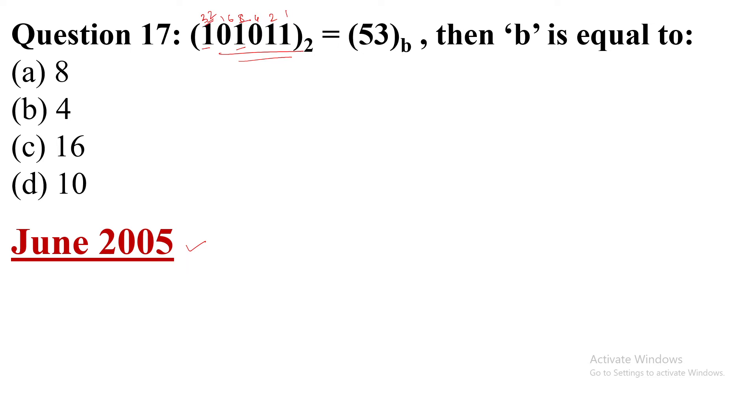So 32 plus 8 is 40, 40 plus 2 is 42, 42 plus 1 is 43. 43 will come in the decimal number system for this binary number. Now equal to 53 base b.